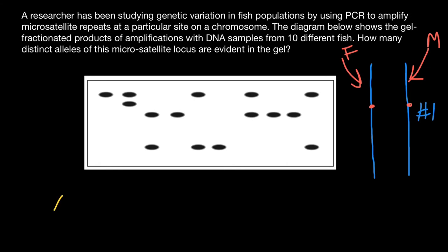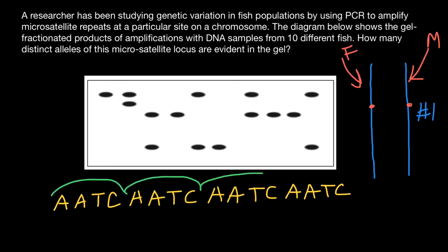the chromosome inherited from the father's side, at this locus may have a repetitive sequence, for example, AATC, AATC, AATC. So we have one, two, three,